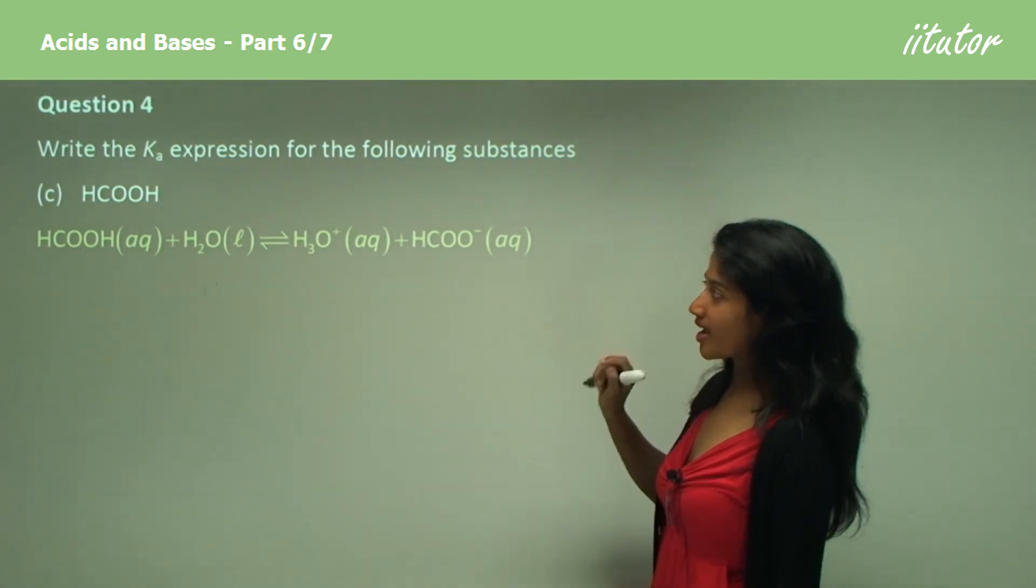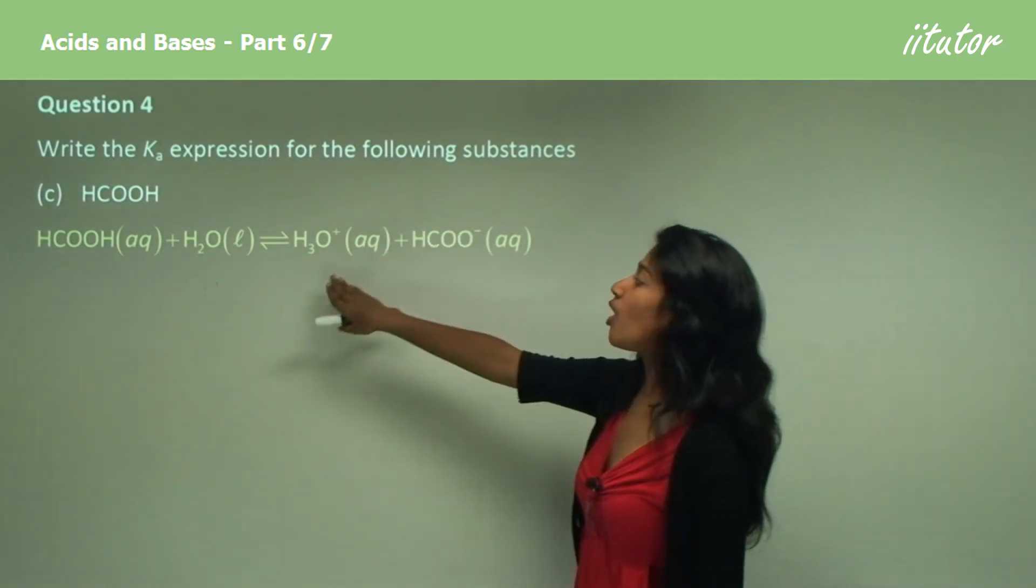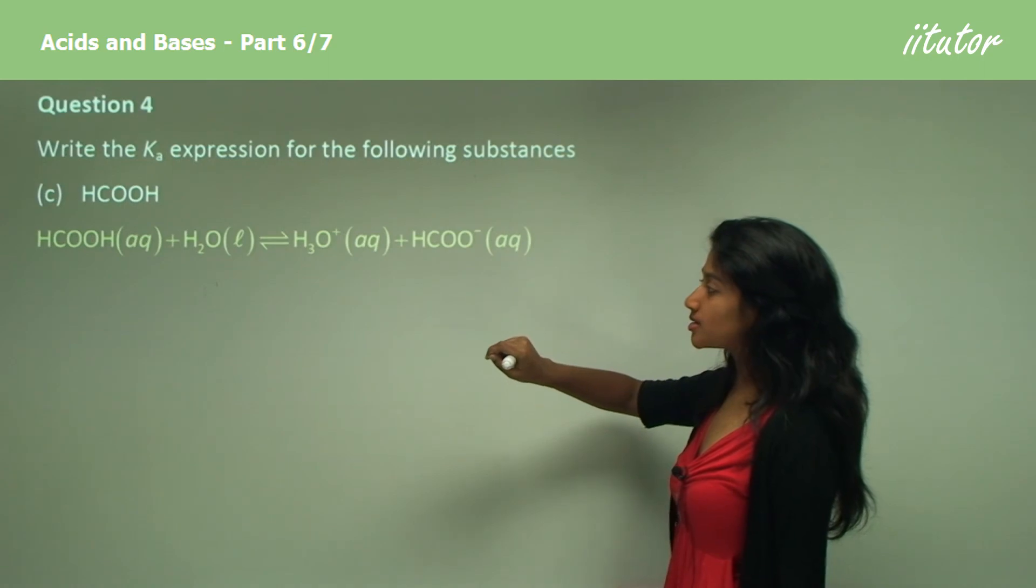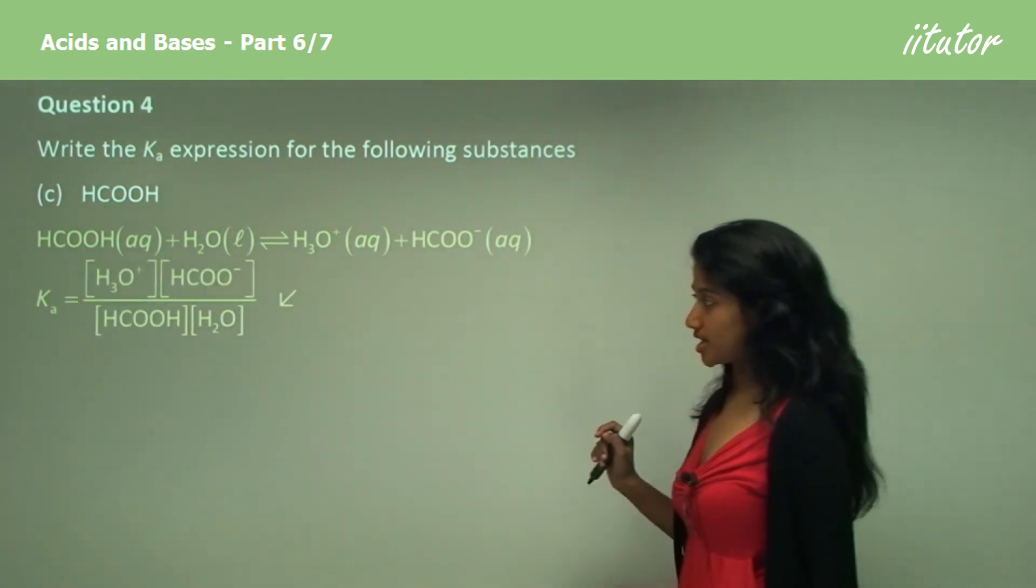So to write the K expression again, we would write the multiplication of the two products divided by the multiplication of the two reactants, as you can see here.